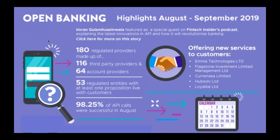53 regulated entities have got at least one proposition live. Some are fully live, some are in a process of going live in a test phase, and some are existing fintechs migrating from screen scraping to open banking APIs. That is changing on a daily basis, and we are seeing quite a lot of adoption of these APIs.